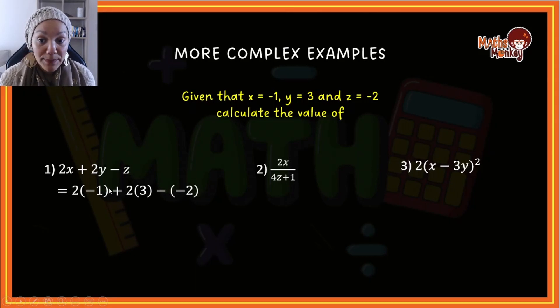Multiplication is what we need to do for each of them first before we can actually add, because of BODMAS. So 2 times minus 1 gives me minus 2, plus 2 times 3 which is 6, and then negative times negative makes this a positive 2. So minus 2 plus 6 plus 2, and the answer is 6.